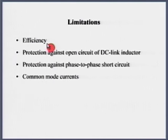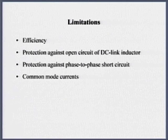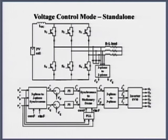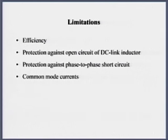Efficiency limit - efficiency is an issue here. Efficiency is slightly lower here. Protection against open circuit in the DC link inductor - you need to ensure that DC link current has to be continuous. Protection against phase to phase short circuit. If there is a phase to phase short circuit here, it is not going to be a powering mode, it is equal to energy storage mode. So you need to protect or you need to sense the phase to phase short circuit as well. And there is common mode currents, there is something similar there. That is about the current source.